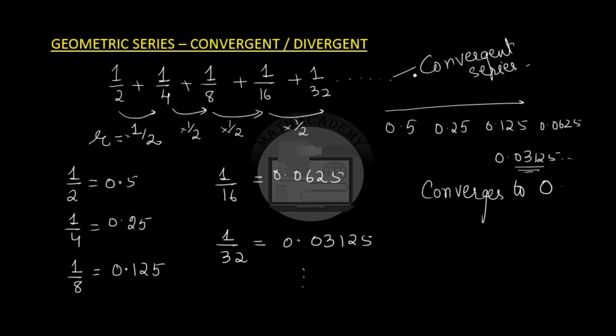Convergent series are series where the magnitude of the common ratio R is less than 1. Since the common ratio is less than 1, every term will be smaller than its previous term, and hence we can find the sum of infinite terms of the convergent series as the terms converge to a specific value. The partial sum formula is S(n) = a · (1 - r^n) / (1 - r) when R is less than 1.